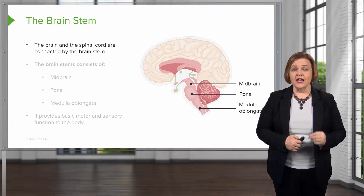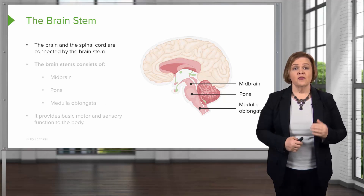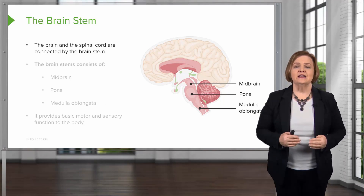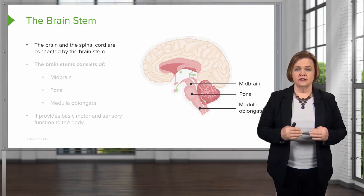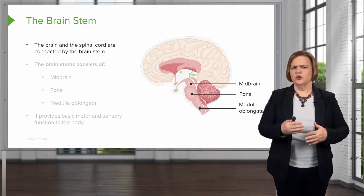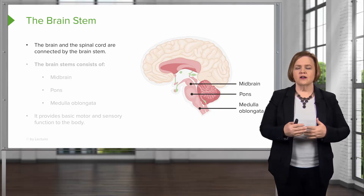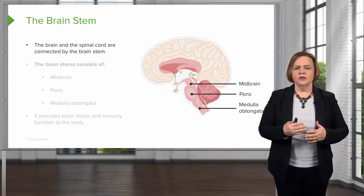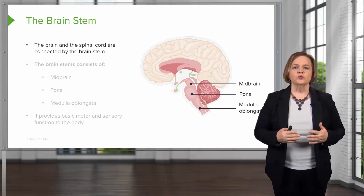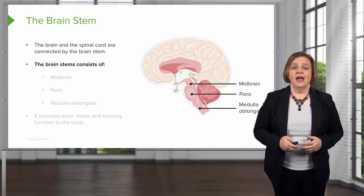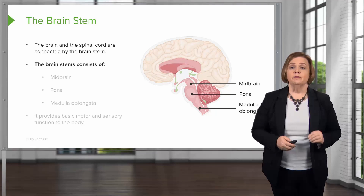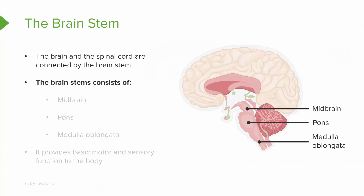The brain stem. The brain and spinal cord are connected by the brain stem. Let's break down what it really is. The brain stem has three parts. As you see in the graphic, it's the midbrain, the pons, and the medulla.